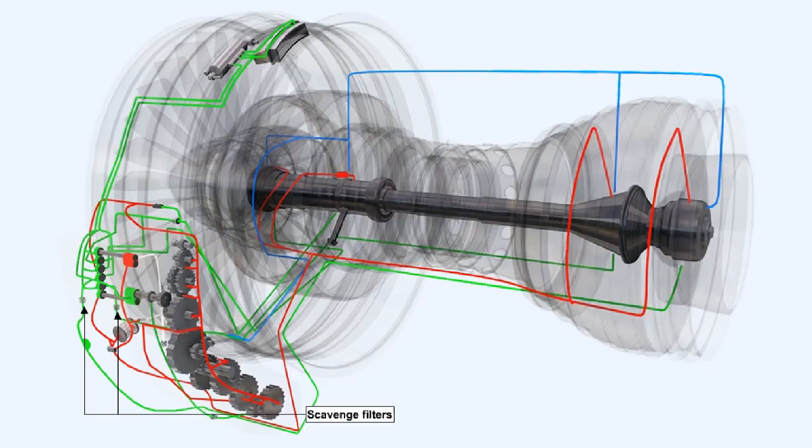Each return oil line contains a scavenge filter just downstream of the magnetic chip detector. These scavenge filters will collect any debris returning from the bearing chambers.